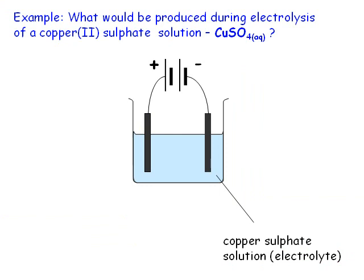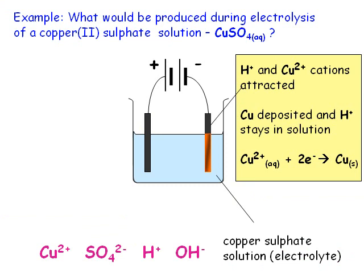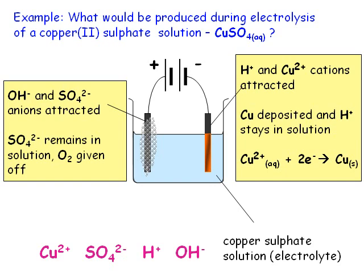Now our electrolyte is a copper sulfate solution. Again, we work out what ions it will contain: Cu²⁺ and SO₄²⁻ from the copper sulfate, and H⁺ and OH⁻ from the water. The Cu²⁺ and H⁺ ions will both be attracted to the negative electrode, and because copper is less reactive than hydrogen, the H⁺ ions will stay in the solution. The Cu²⁺ ions will gain electrons and become copper atoms, which will be deposited as copper metal on the surface of the cathode. The SO₄²⁻ and OH⁻ ions will both be attracted to the positive electrode. According to our rule, the sulfate ions will stay in the solution and the hydroxide ions will lose electrons to form bubbles of the element oxygen and water molecules, which we can show using this half equation.